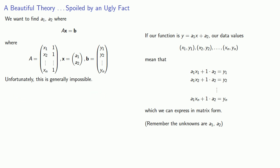So instead, we'll try to minimize the difference between Ax, which we can think about as the predicted values, and b, which are the observed values. The obvious way to minimize the difference is to make the distance between Ax and b as small as possible. And this means we want to minimize the norm of Ax minus b.